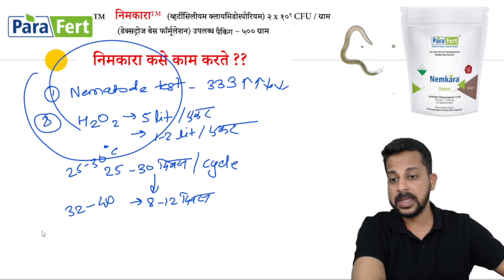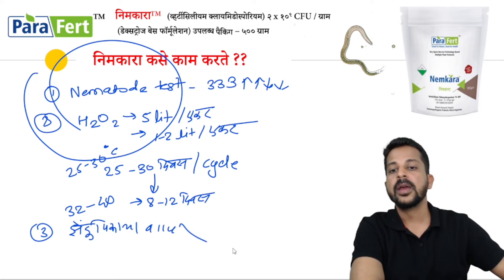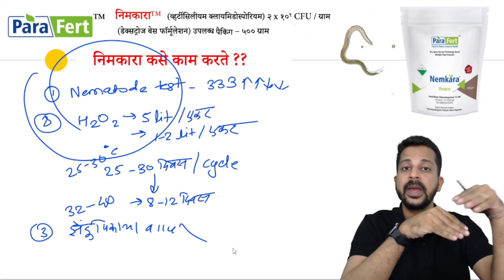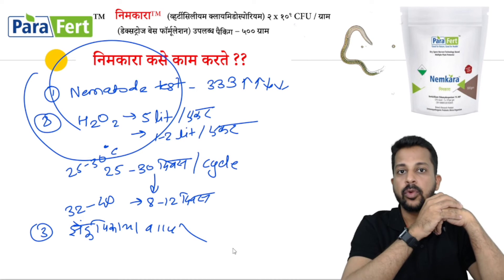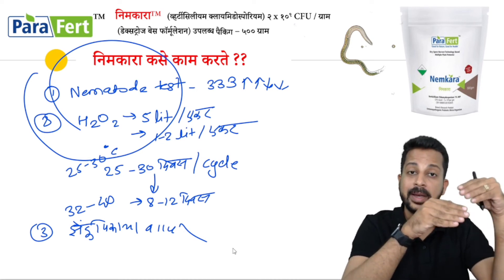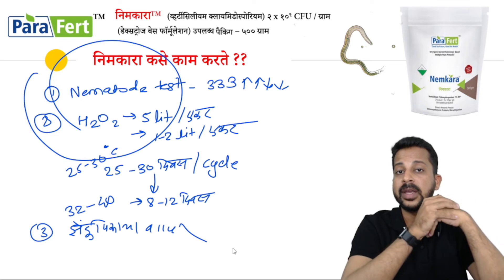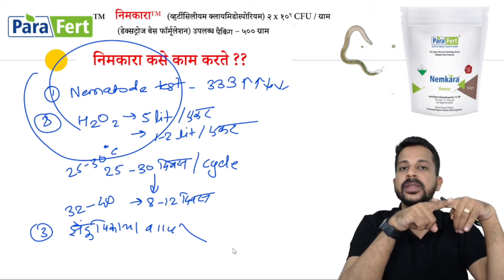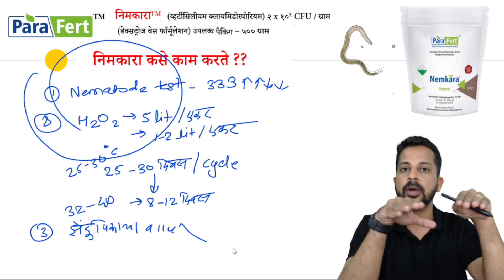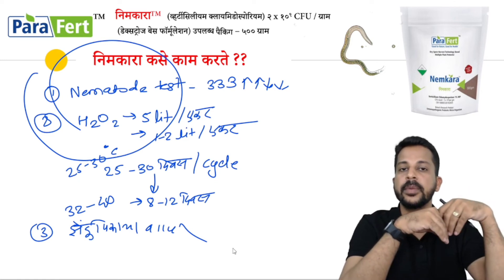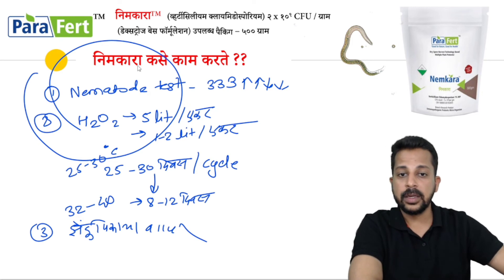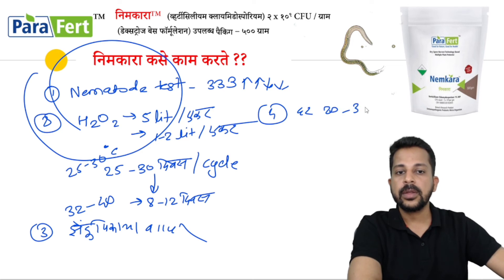We have to complete this cycle — the crop cycle. But if you have 4,000 degree-days in nematode, then you have to complete the result of the nematode. Because the nematode uses organic material, you have to complete the nematode cycle. What happens in the case of a neemkara?